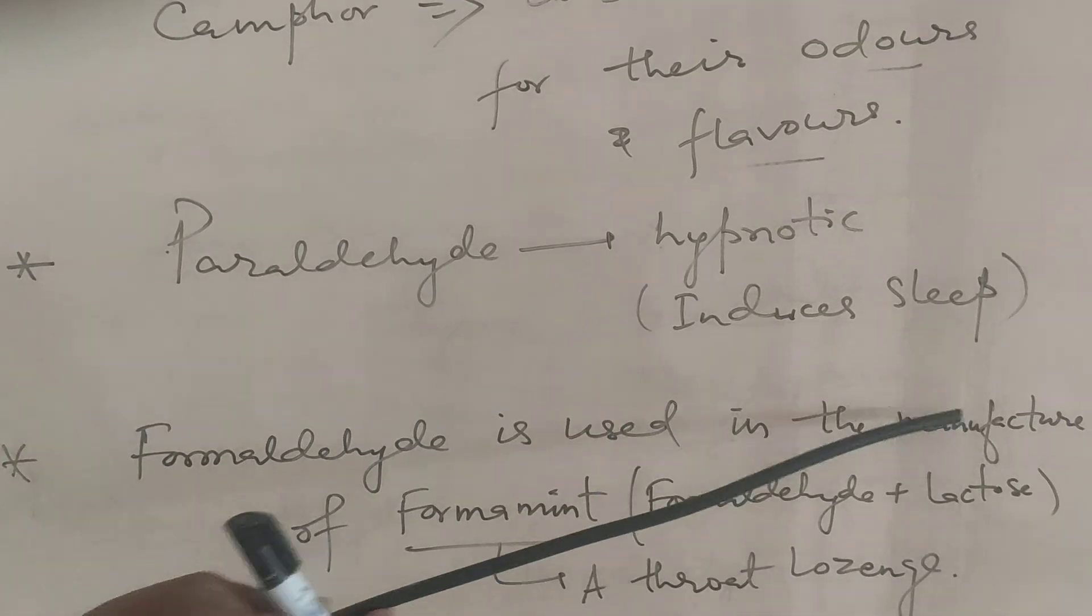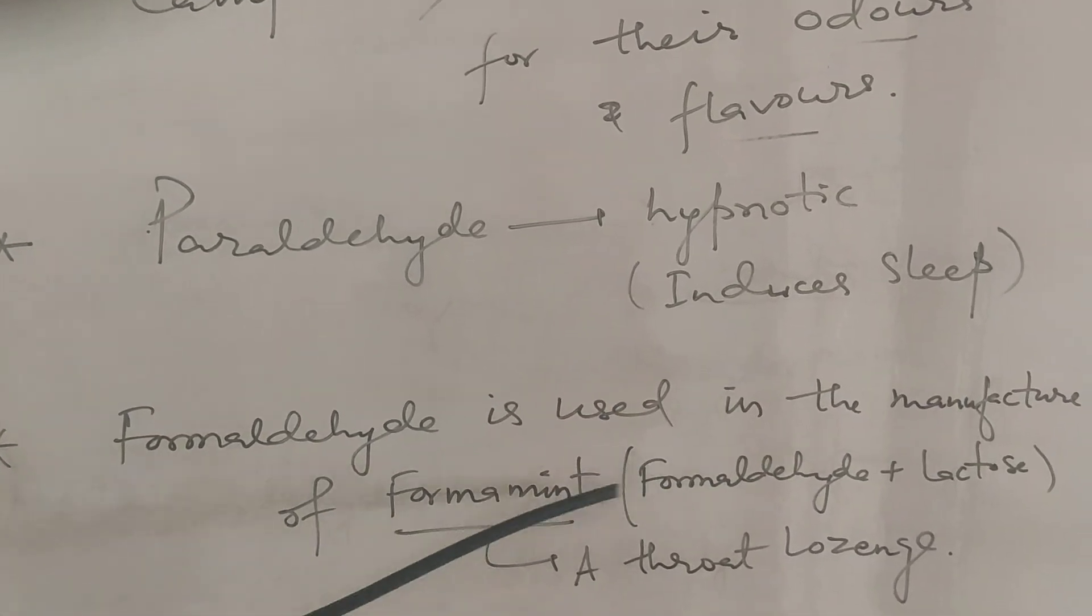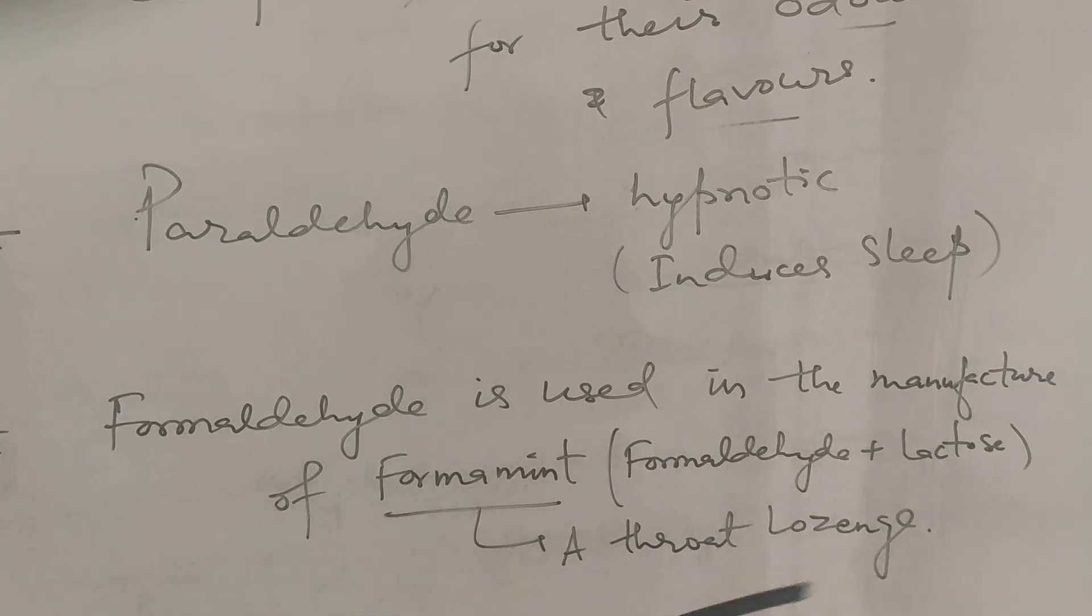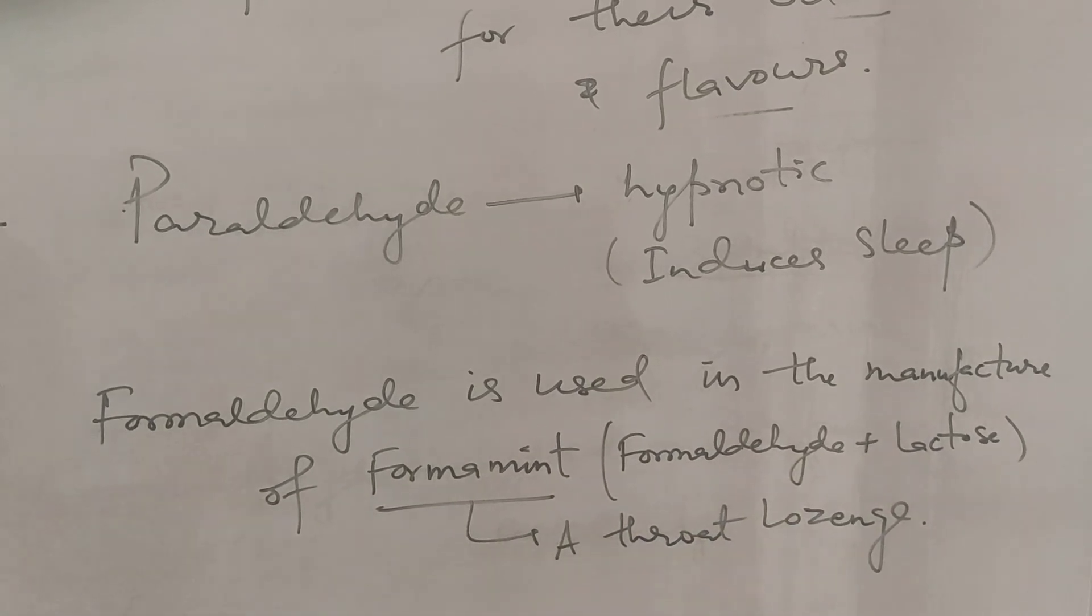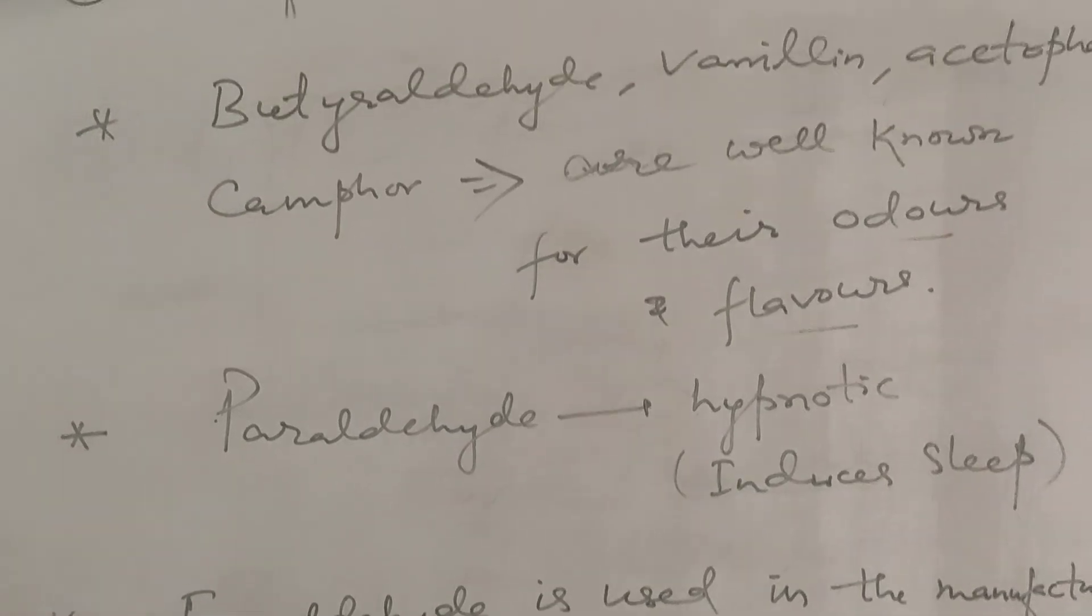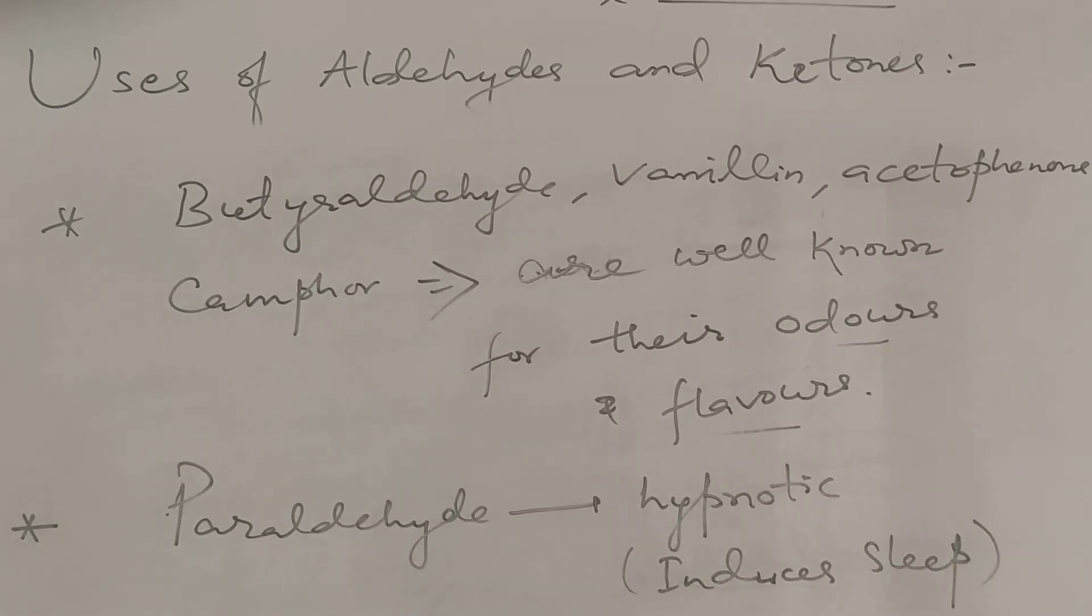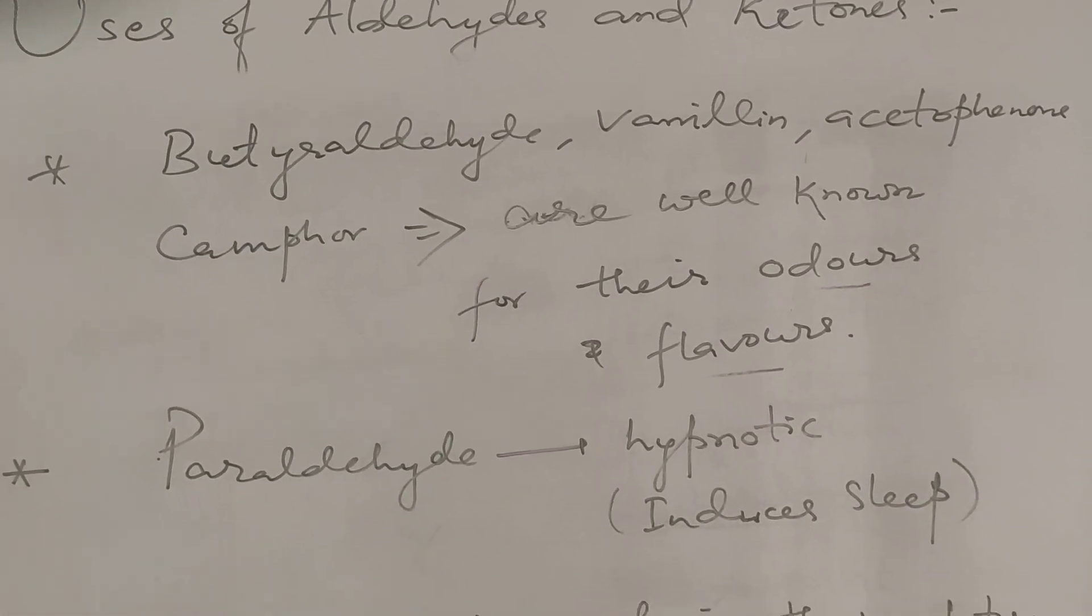Formaldehyde is used in the manufacture of formamint. Formamint is formed when formaldehyde is added with lactose. It is a throat lozenge.